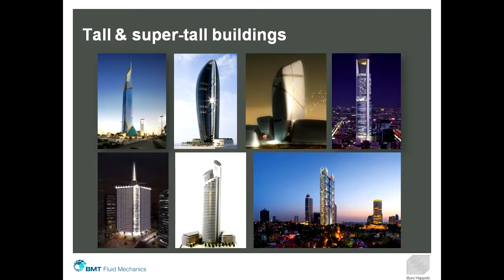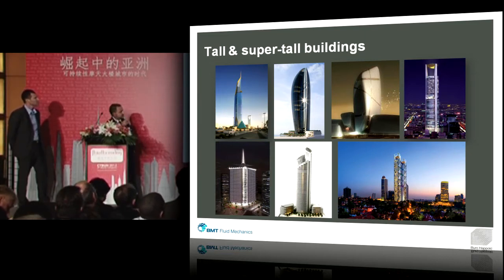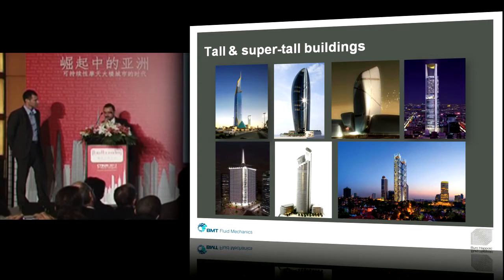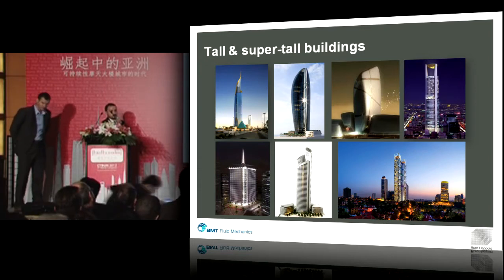Mark and I decided to put this slide right at the beginning of this presentation because we think it summarizes some of the challenges that we are nowadays facing when it comes to tall building design. As we can all appreciate, tall buildings are getting taller and taller, often more and more slender, and at the same time the level of complexity of the architectural shape and forms is increasing. Some of these are good ingredients for making a vertical structure more wind-sensitive.